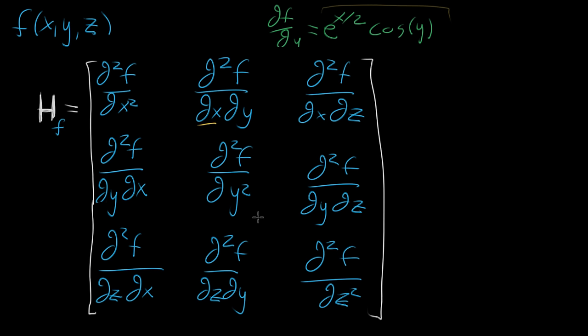The nice thing about having this notation is that we can reference all second derivative information with just this one symbol. In the next video, we'll see how this makes it very nice to express the quadratic approximation of any multivariable function — not just a two-variable function — without the symbols getting out of hand, because you can reference the matrix as a whole and start doing matrix operations.